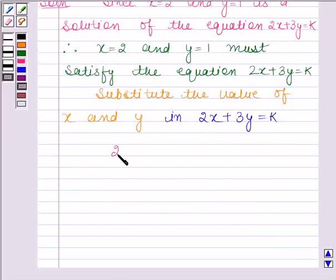Now, x is equal to 2 and y is equal to 1. So we have 2 into 2 plus 3 into 1 equals k. And this implies that 4 plus 3 is equal to k.